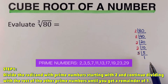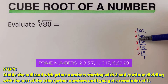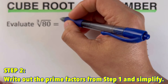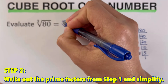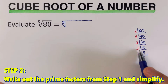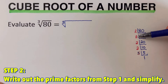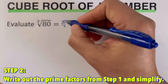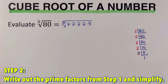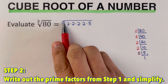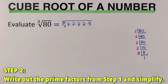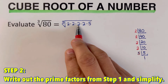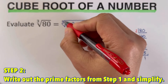Therefore, the prime factors of 80 are these numbers. So that is the cube root of — listing all of these down — four 2s, and one 5. Since this is a cube root, we are going to come up with a group of three numbers. In this case, we have four 2s. We only need three because there's three of them, so I will group them together.